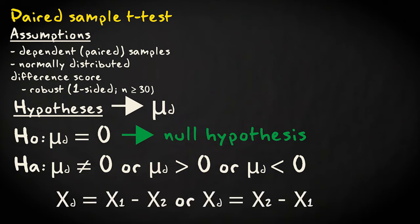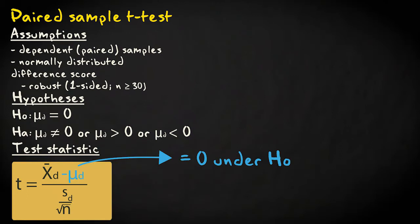The interpretation depends on how you calculate the difference scores — subtracting group 2 from group 1, or the other way around. The test statistic t equals the mean difference score minus the expected value under the null hypothesis (which is 0), divided by the standard error, which equals the standard deviation of the difference scores divided by the square root of the sample size — the number of paired observations.